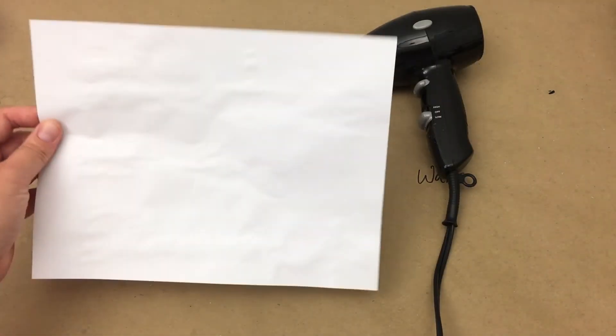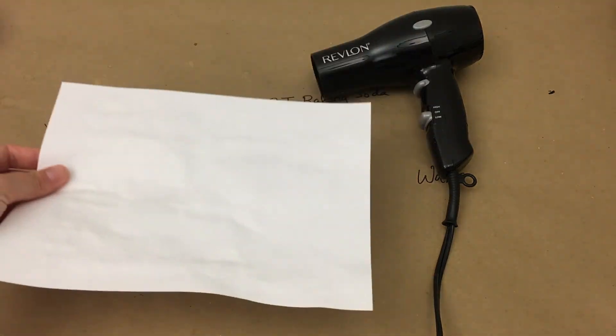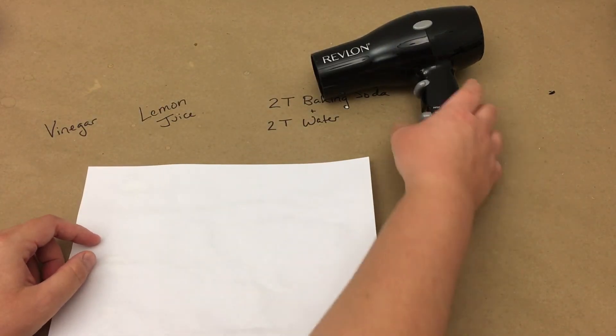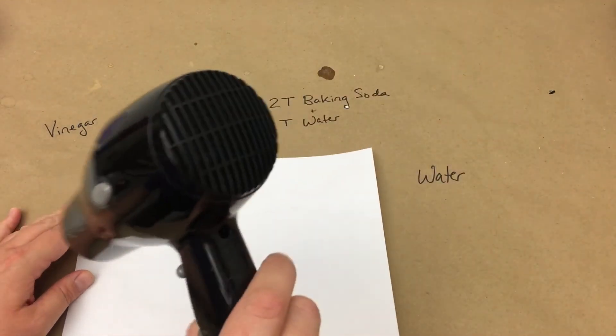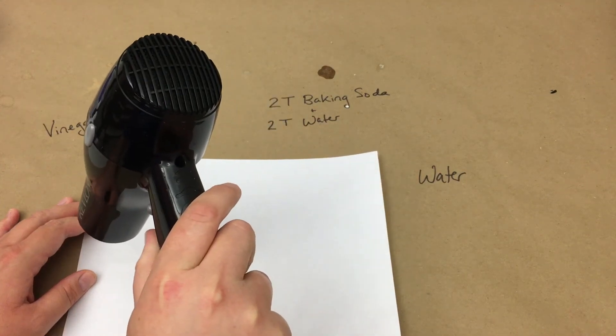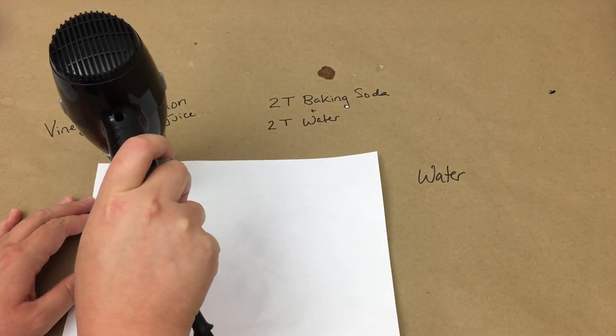Finally, we are going to try to reveal our message that we wrote in lemon juice, milk, or vinegar. You will need a hair dryer such as the one that I have here. Turn it on and aim the hot air at the message. Be careful not to burn your fingers.